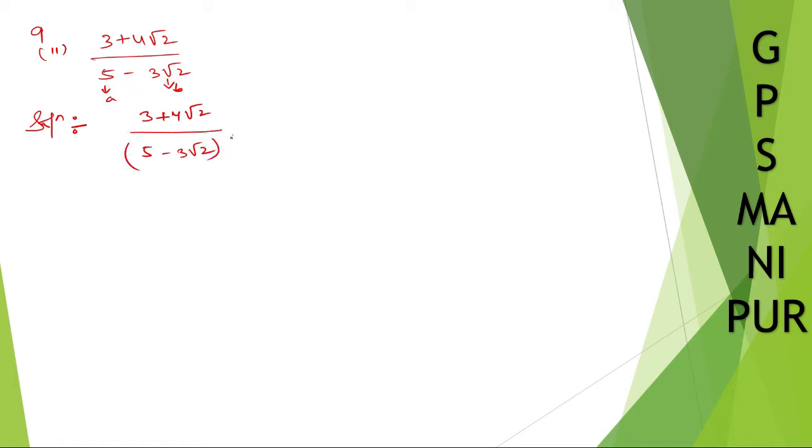So a minus b into a plus b. a is 5 plus 3 root 2, a plus b. And this a plus b, if you happen to take into the numerator, it will become 5 plus 3 root 2. I hope you can understand this much. Numerator and denominator.